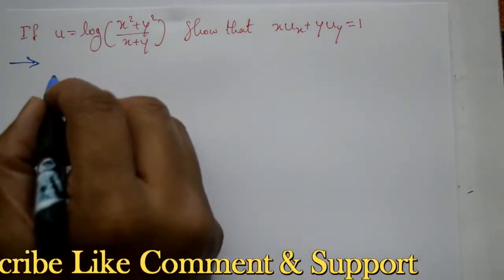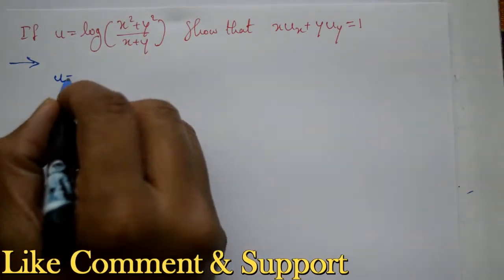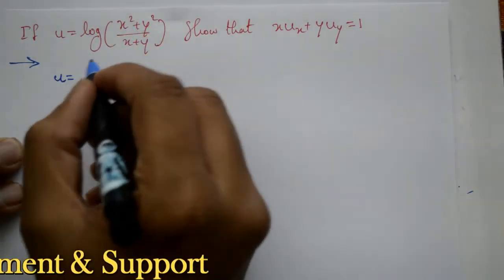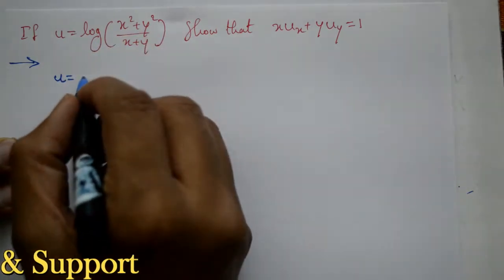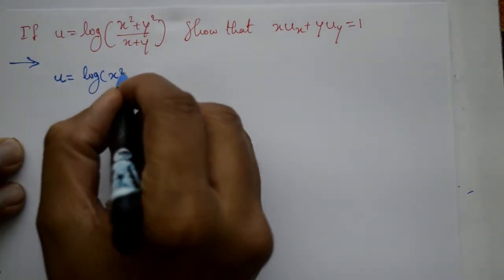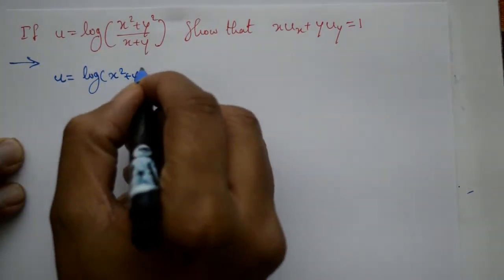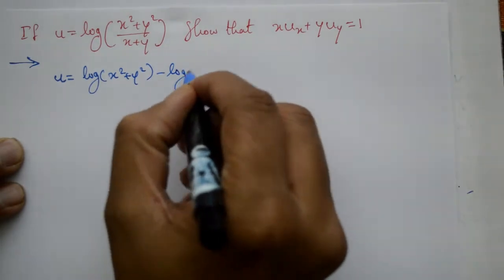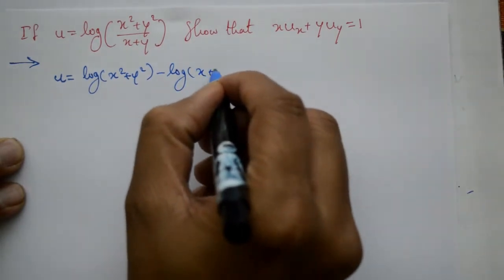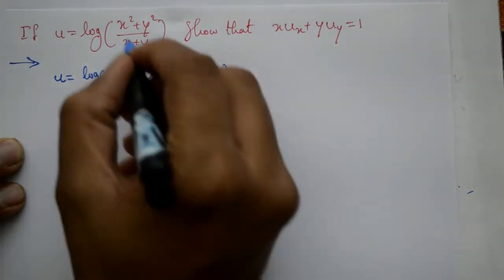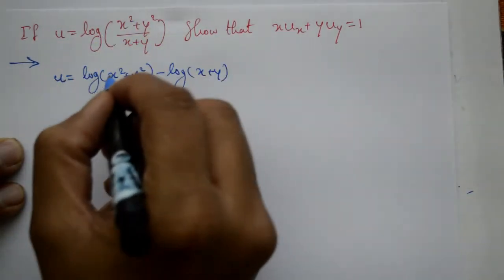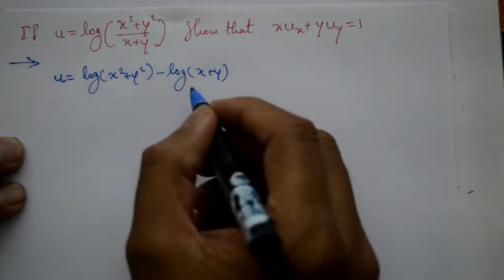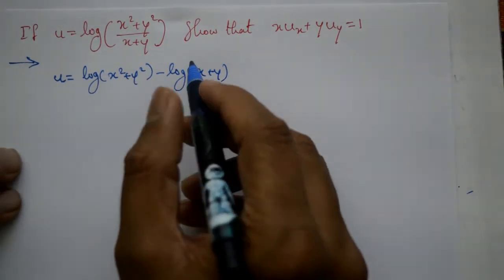Yeh baut simple problem hai. You can write function u is equal to log a by b — is log property use karenge. So u equals log of x square plus y square minus log of x plus y hai. Log a by b is equal to log a minus log b property use karna hai.